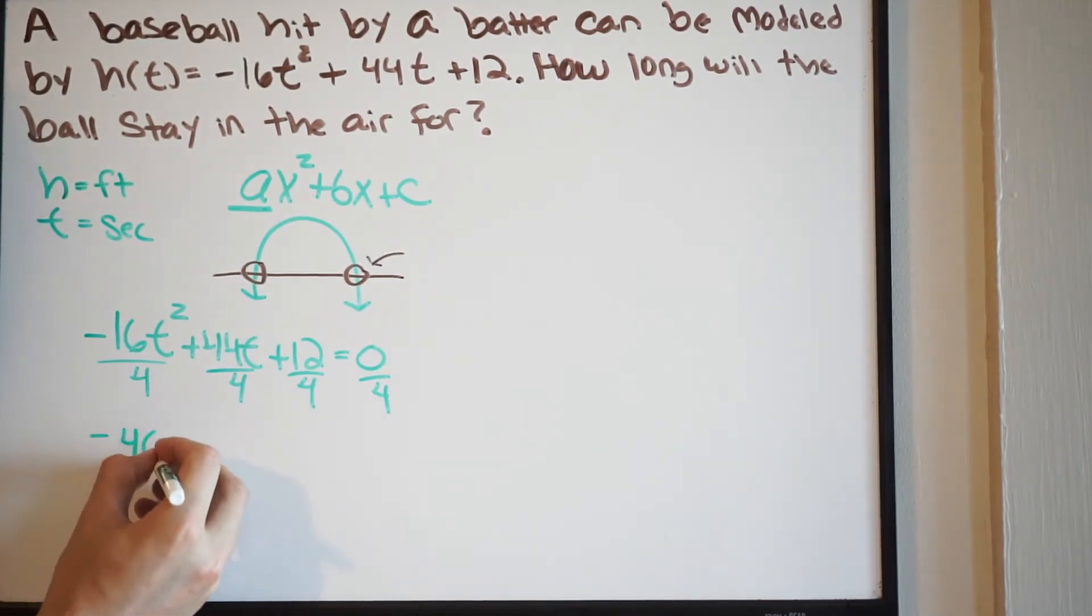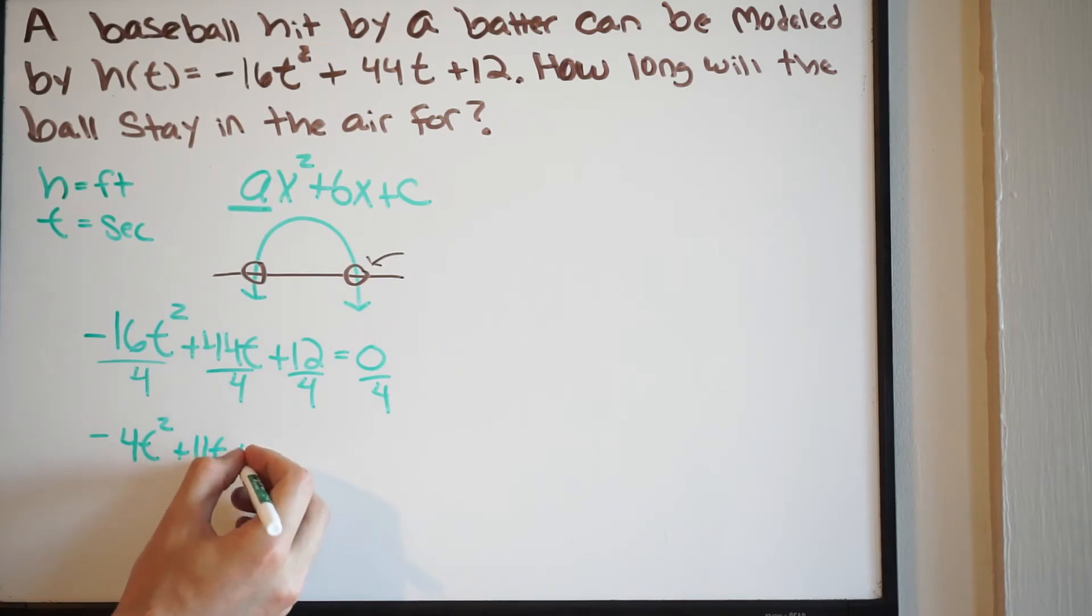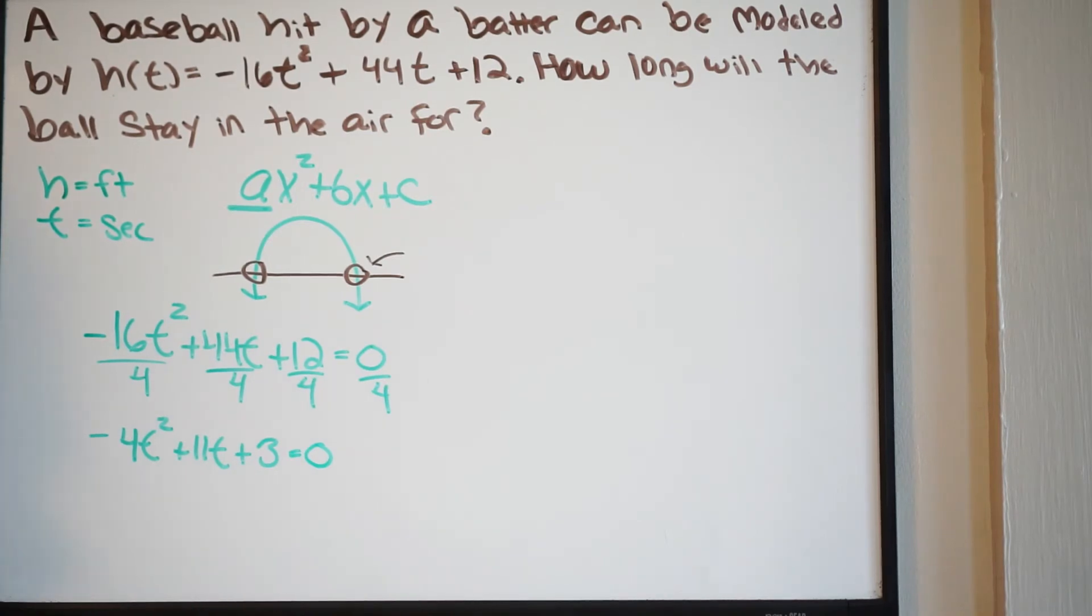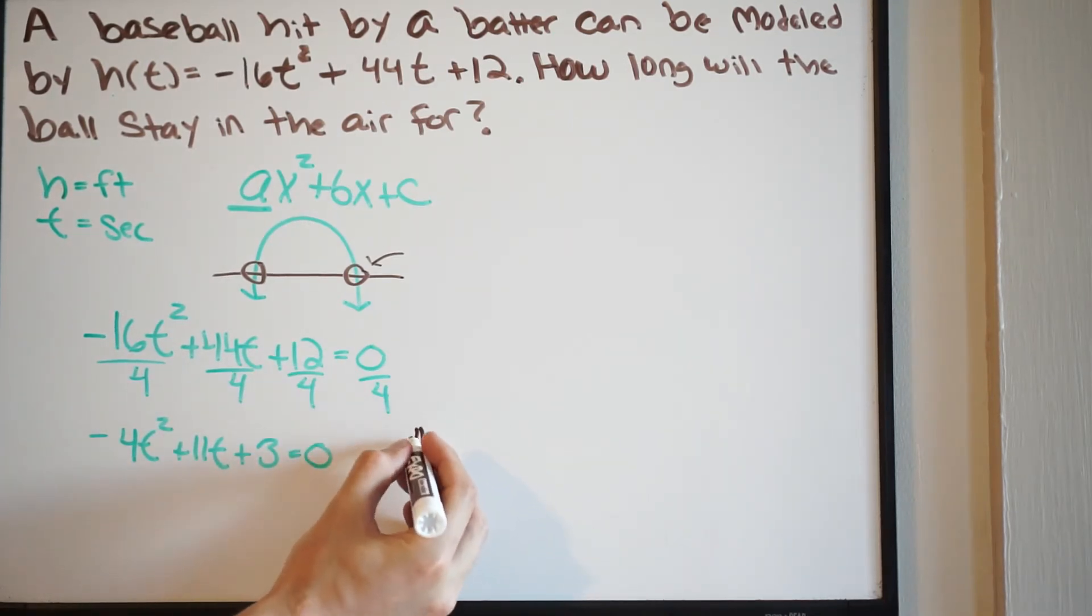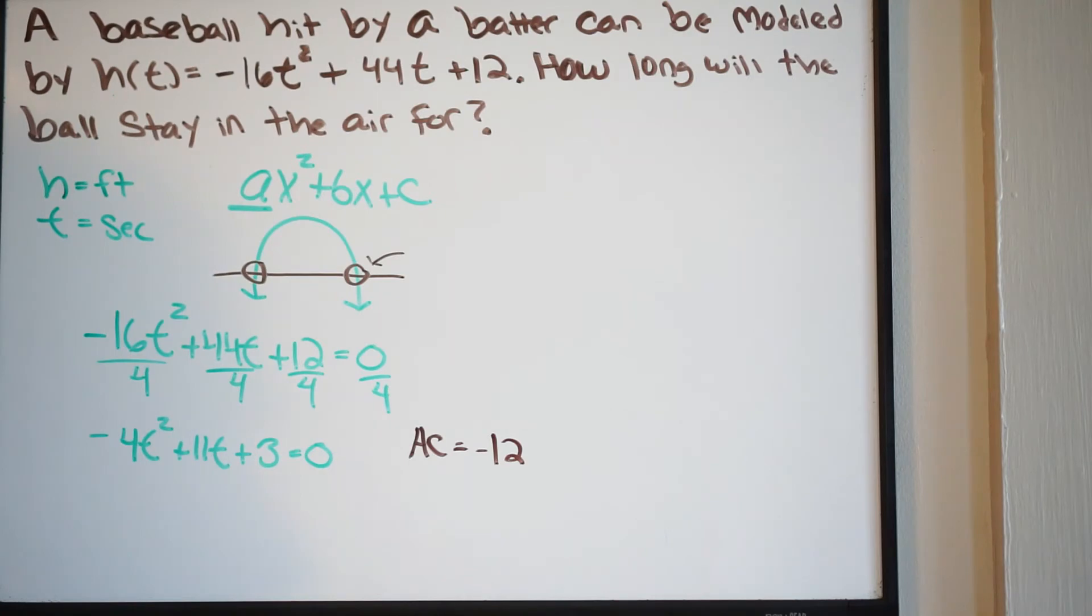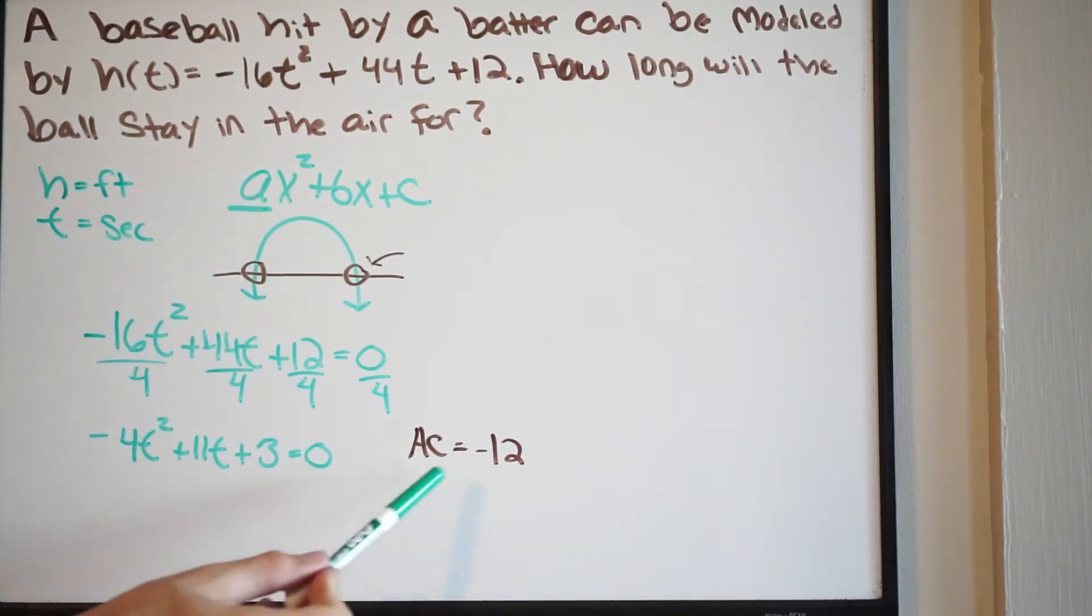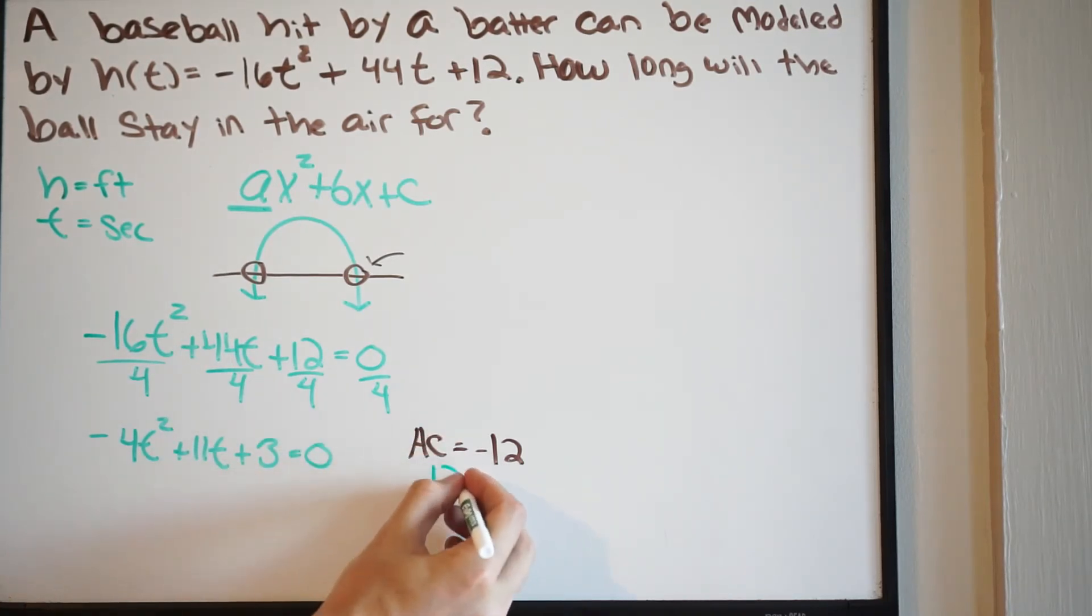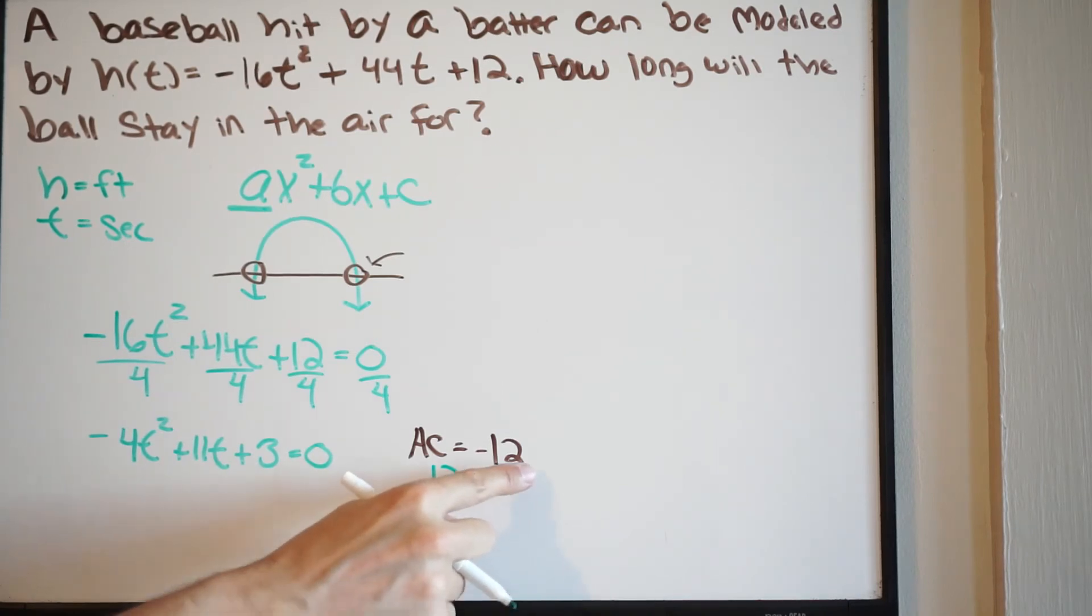So again, we're just going to go ahead and divide. In doing that, we get the following. We get negative 4t squared plus 11t and then plus 3. Again, 0 divided by 4 is 0. So we're going to do this using the AC method, meaning I multiply A times C. So in this case, negative 4 times 3. So the letter right here, A times C is going to be, well, that's going to be negative 12. And then we say to ourselves, what two numbers, when I multiply, will give me negative 12, but add up to 11? And that's going to be 12 and negative 1. When I multiply these two, I get negative 12. When I add them, I get 11.